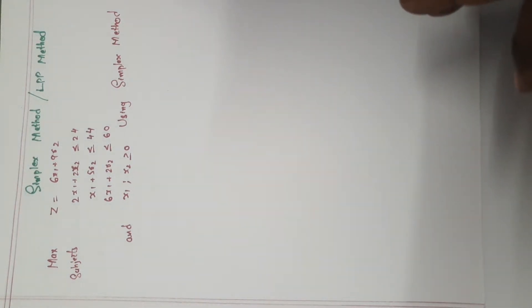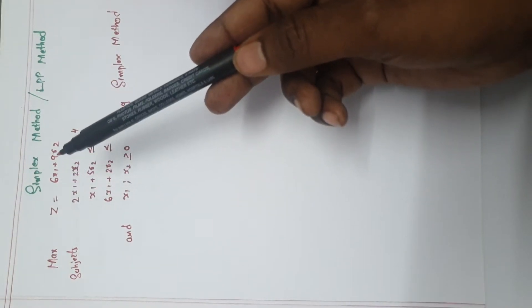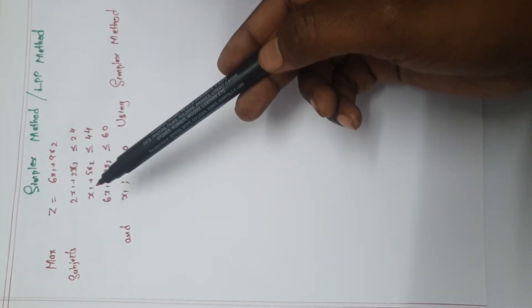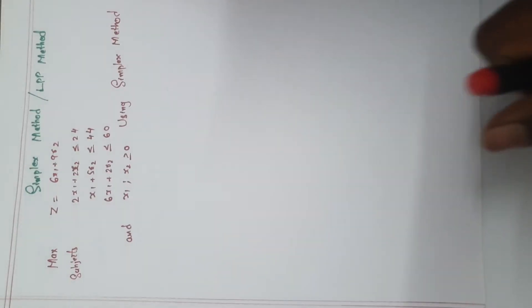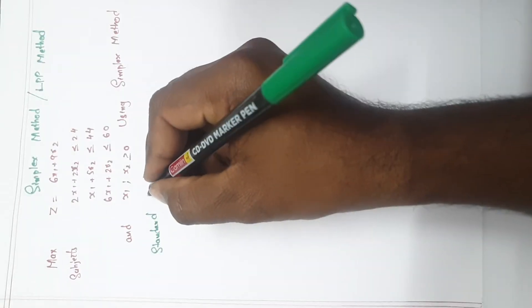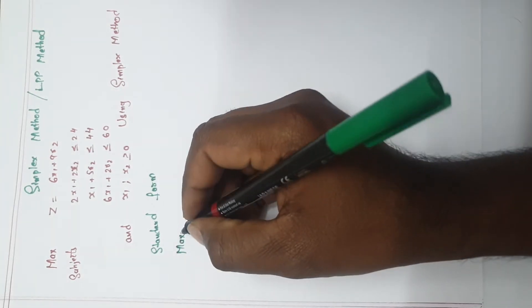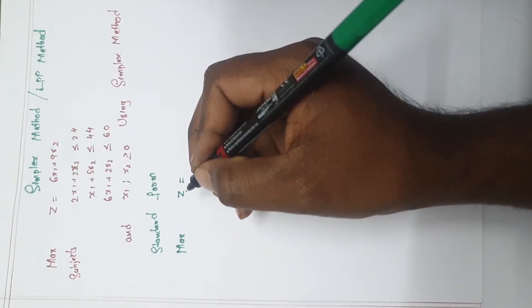The another name of simplex method is LPP method. The maximum equation given is z = 6x1 + 9x2, subjected to 2x1 + 2x2 ≤ 24, x1 + 5x2 ≤ 44, and 6x1 + 2x2 ≤ 60. First, you have to write the standard form.